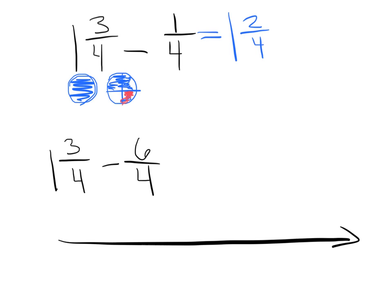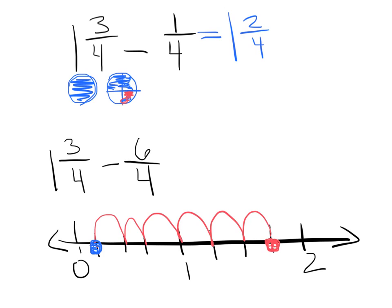So on this one, I'm going to go ahead and draw a number line. The largest number I need is 2, because I start with 1 and 3/4. So I'm going to cut this into fourths, and I'm going to put a point where I have 1 and 3/4, and I'm losing 6/4. So I'm going to go down 6/4: 1, 2, 3, 4, 5, 6. Now where did I land? I landed at 1/4. So if I had 1 and 3/4, and I lost 6/4, I would have 1/4 left.